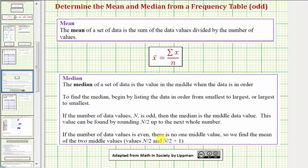If the number of data values is even, then there is no middle data value, so we find the mean or average of the two middle values, which would be in the n divided by 2 and n divided by 2 plus 1 position.